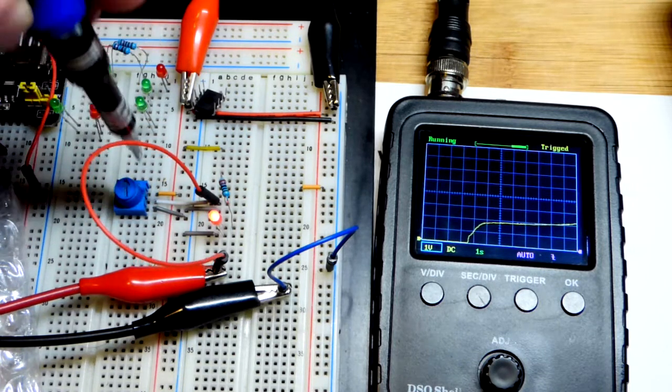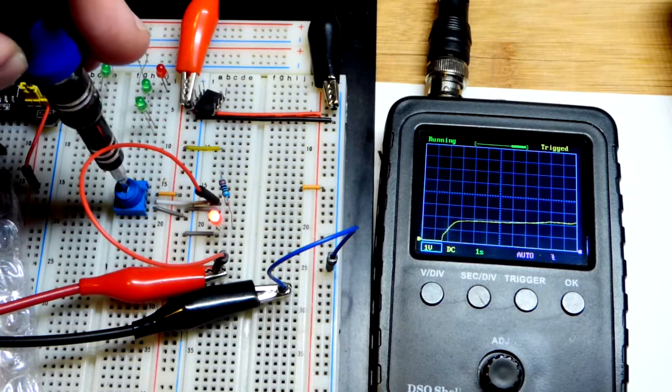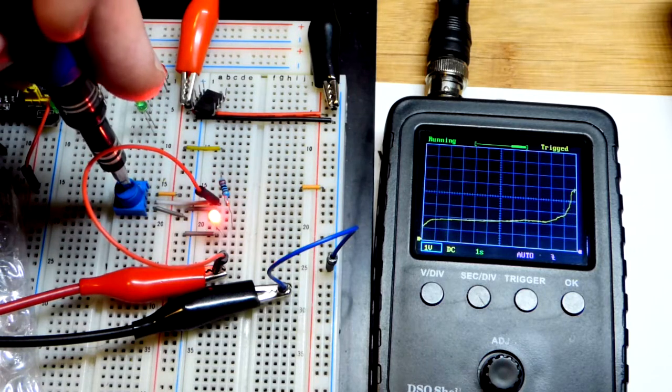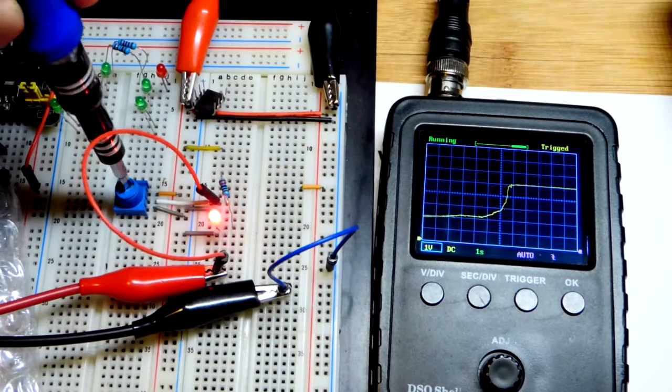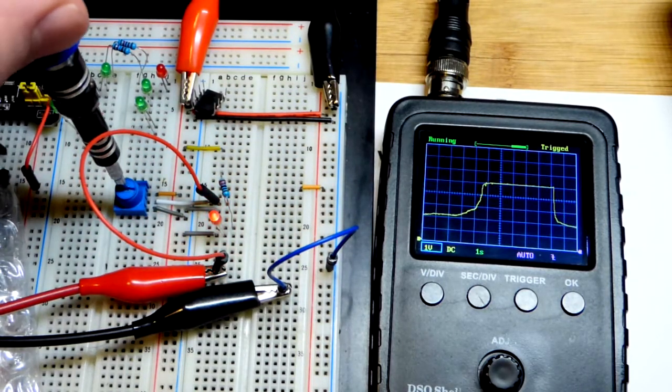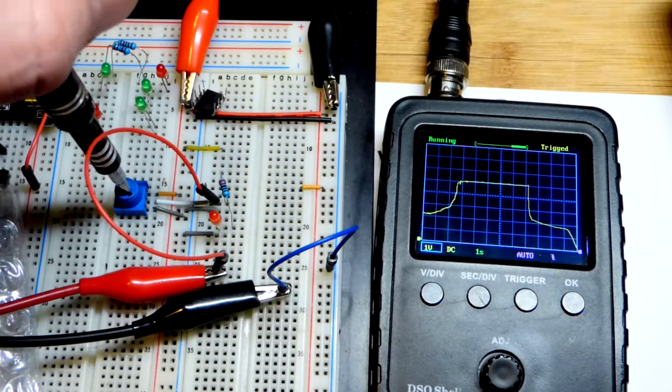But then once I get pretty close all the way to the positive rail, all of a sudden there's not much resistance up here anymore and the voltage shoots up. So it's not transferring the voltage near as well. It's really not transferring it well at all.